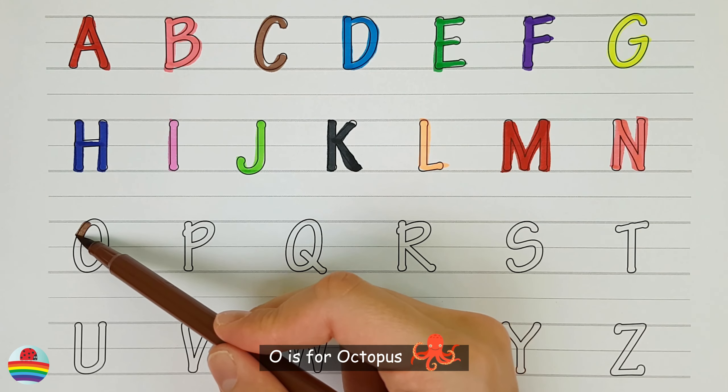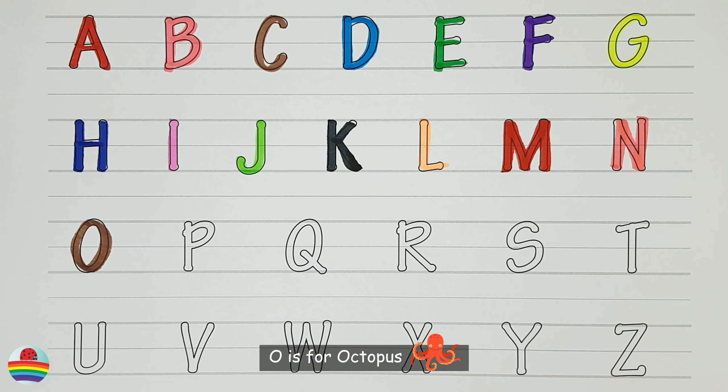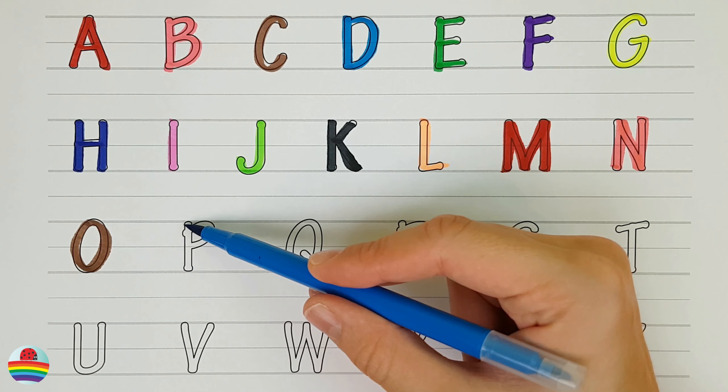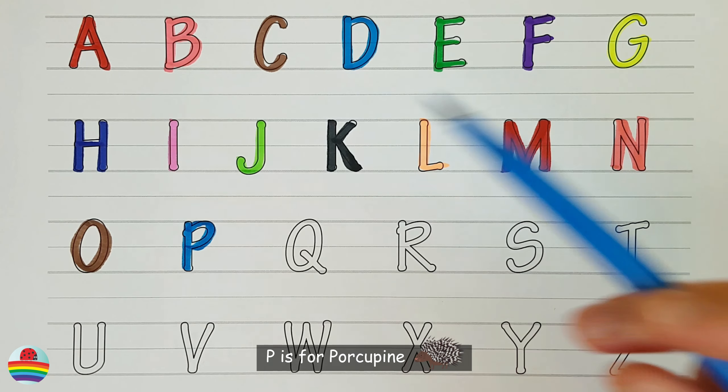O. O is for octopus. P. P is for porcupine.